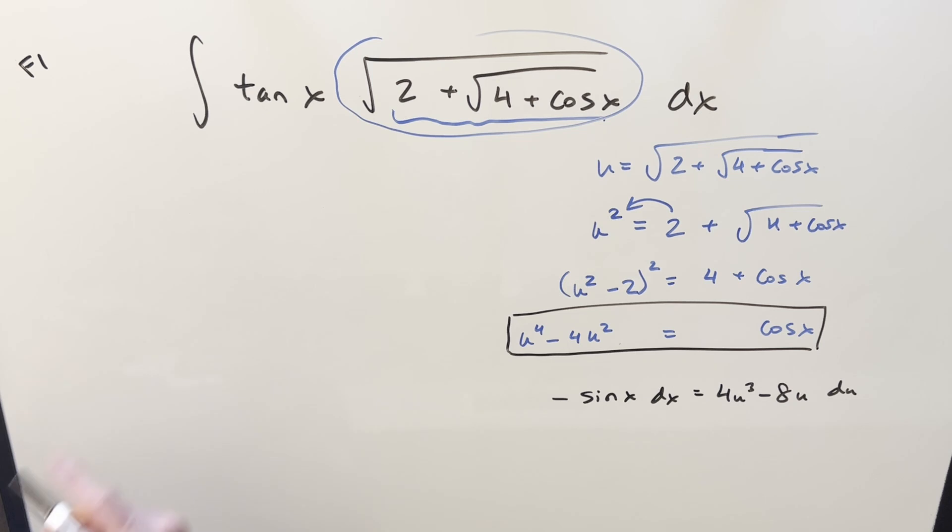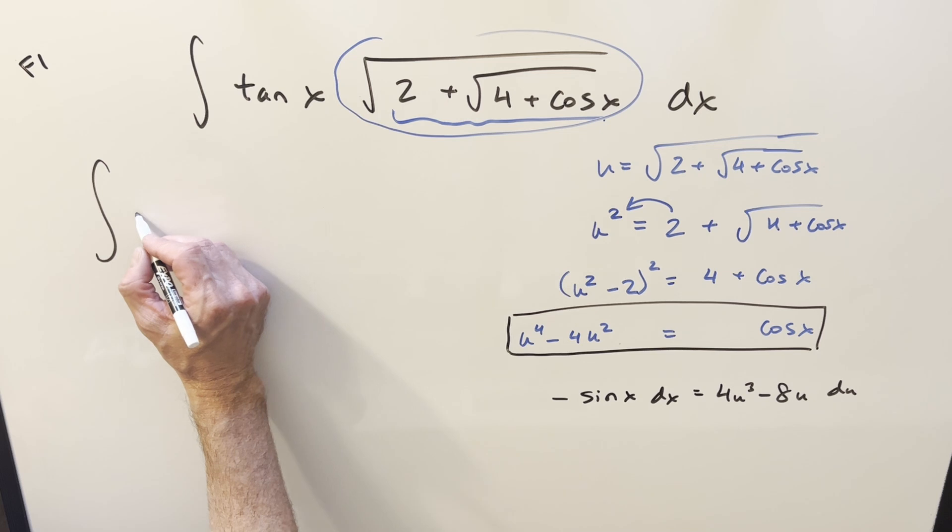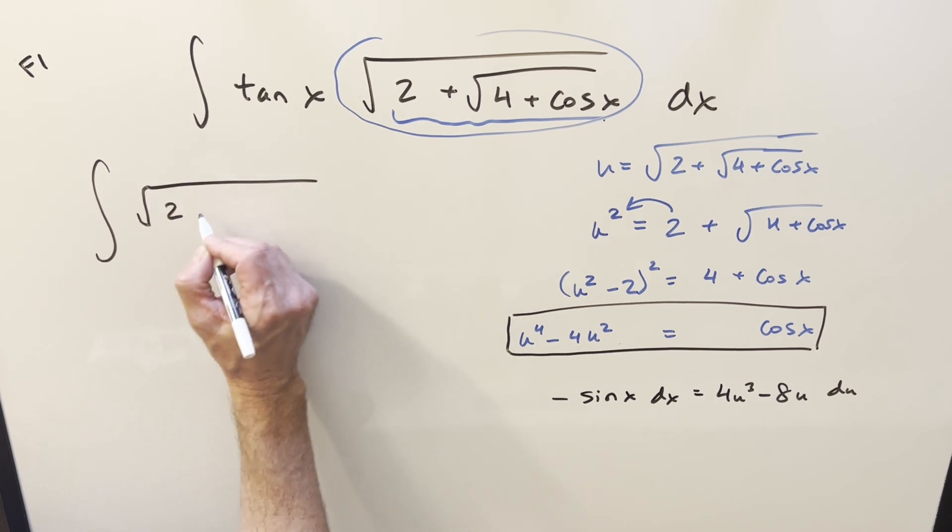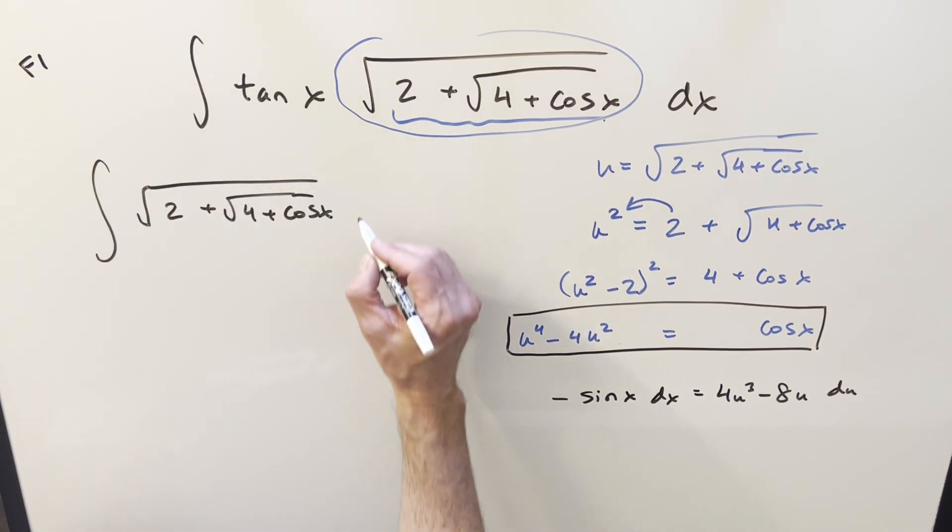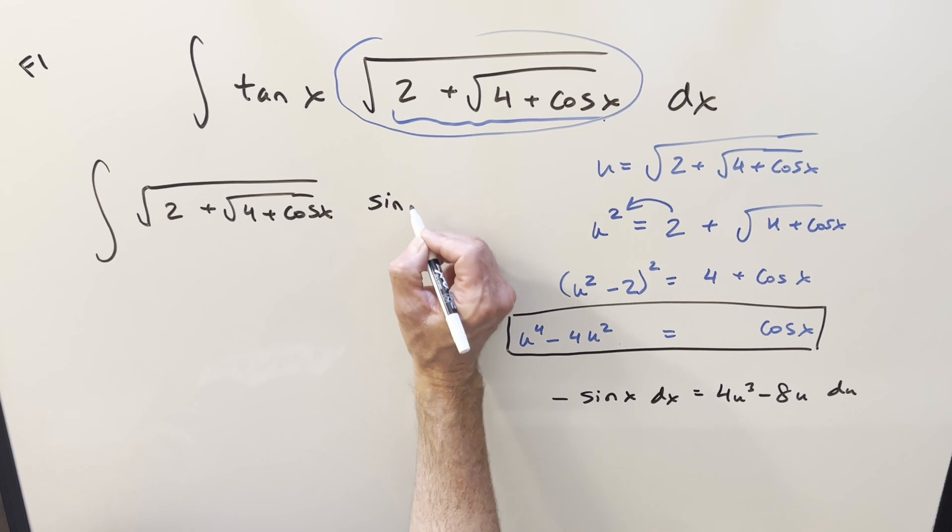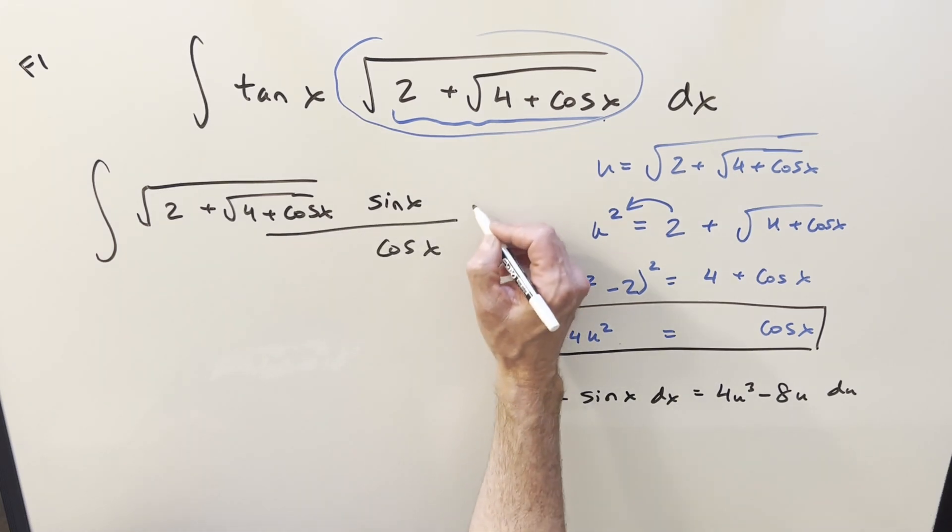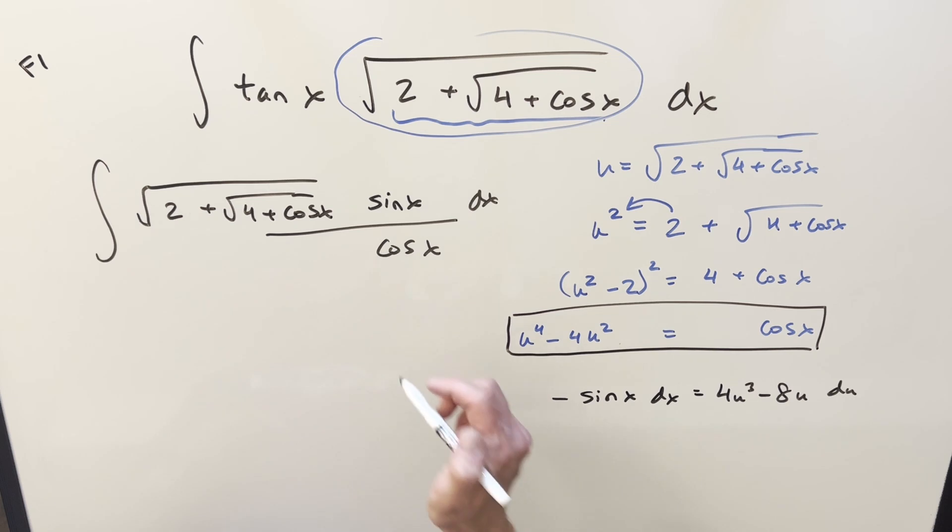And then I think we have everything we need if we just rearrange this a little bit. So I'm just going to rewrite this the way I want it. First, let's bring the square root over here in front. For tan x, I'm going to break this up. I'll write it as sine x all over cosine x dx. We have sine x dx, well actually we have minus sine x dx. Let's turn this into a minus sign, and then I can bring a minus out front.